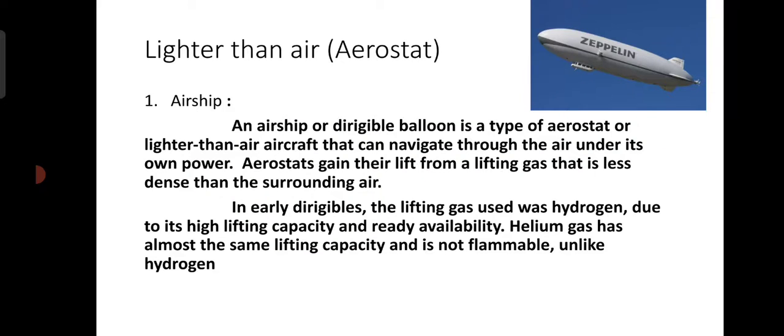Here is a small flowchart showing the classification of aircraft. Aircraft are primarily classified into two main types: lighter than air, called aerostat, and heavier than air, called aerodyne. In lighter than air there are three types: airship, free balloon, and kite balloon.